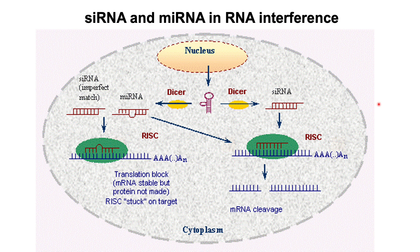RNA interference or silencing is a cellular mechanism that inhibits gene expression at the stage of translation or by degrading the mRNA transcripts. The cell usually adopts this mechanism when it identifies viral RNAs or other foreign RNAs integrated in our genome because of infection, and tries to destroy them. This has been adapted for several applications in agriculture and medicine.